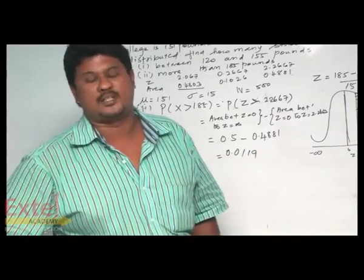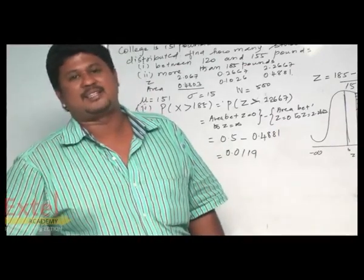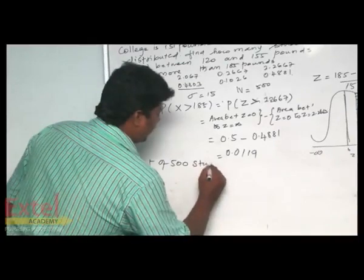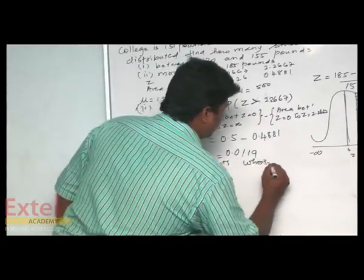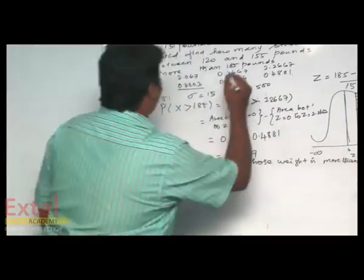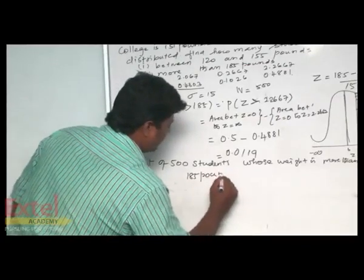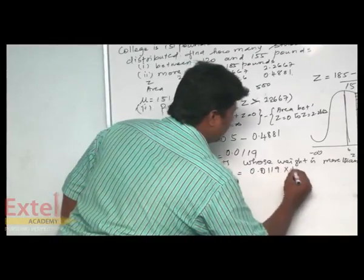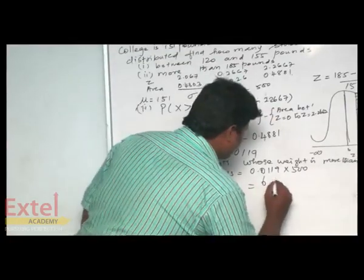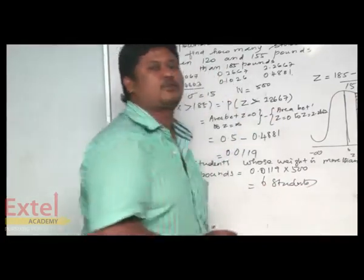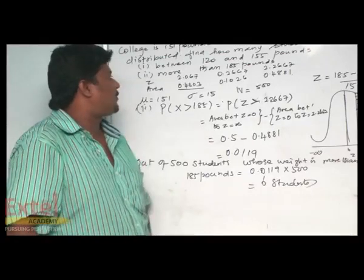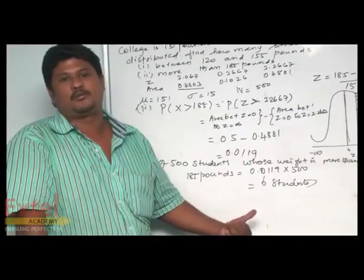Out of 500 students, the number of students whose weight is greater than 185 pounds is equal to 0.0119 multiplied by 500, which is equal to 6 students. So this is the second part of the question.